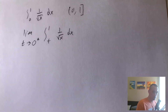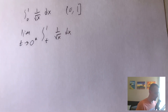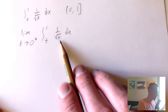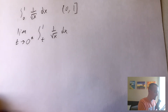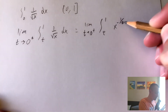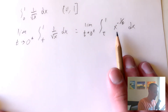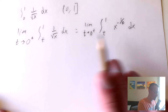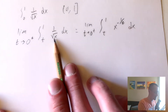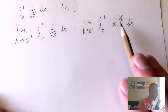Now this is the new integral and limit we want to solve. As long as we get a defined number, we can say this is equivalent to the integral we started with. To integrate 1 over the square root of x dx, we rewrite it as x to the negative 1/2, because that's equivalent to 1 over the square root of x and easier to integrate. We can now use the power rule.